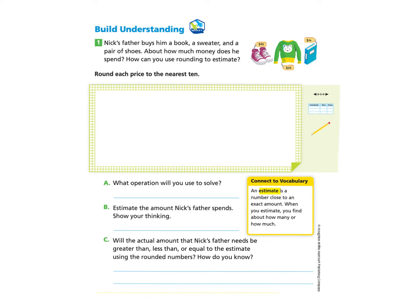Nick's father buys him a book, a sweater, and a pair of shoes. About how much money does he spend? How can you use rounding to estimate?